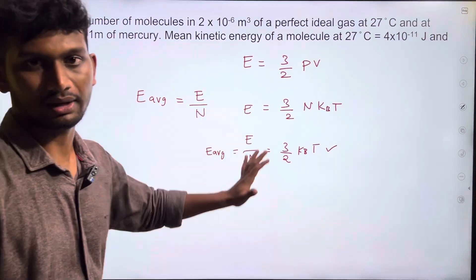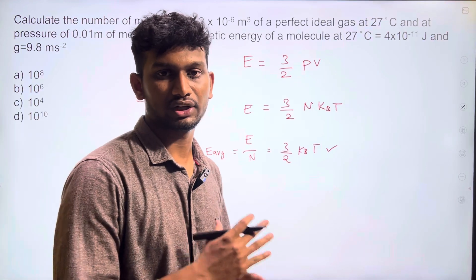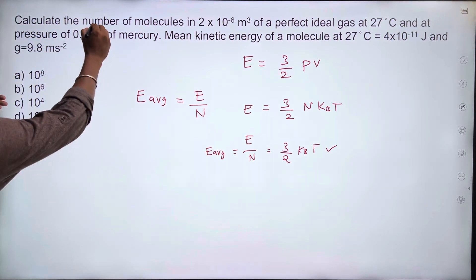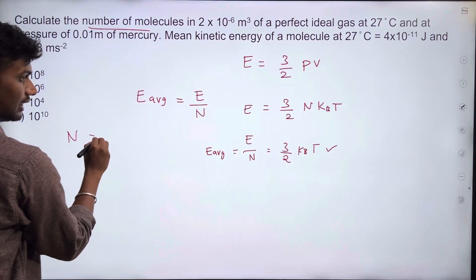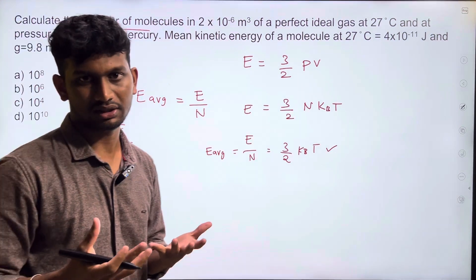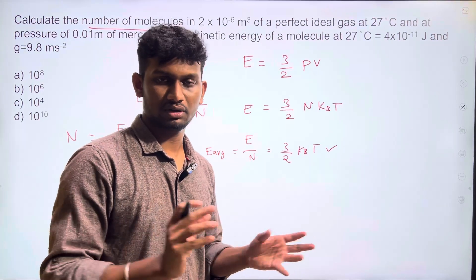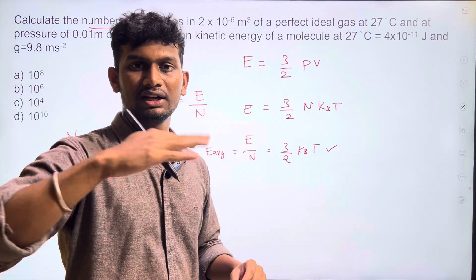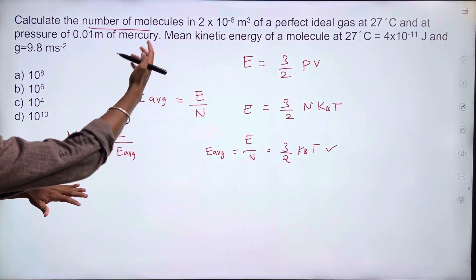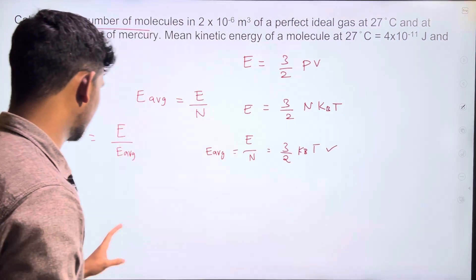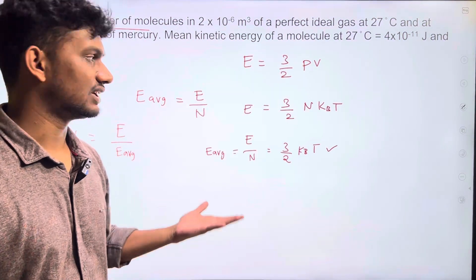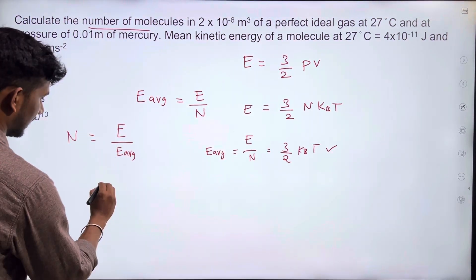E_avg multiplied by the total number of molecules gives total energy E. We are going to find the number of molecules N, which is nothing but E divided by E_avg. The total energy E is not explicit from pressure, so we use E = 3/2 · P · V.